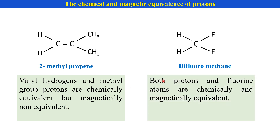In the case of difluoromethane, both hydrogen and fluorine are chemically and magnetically equivalent. Because the coupling of one proton with one fluorine is a geminal coupling, and the coupling of that hydrogen with the other fluorine is also a geminal coupling — that is, a two-bond coupling.